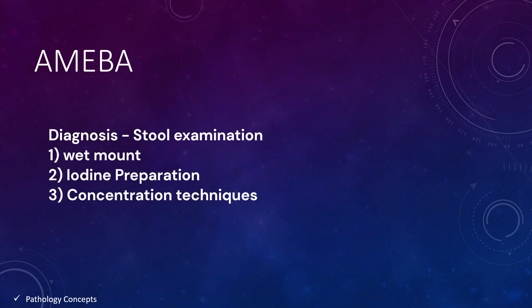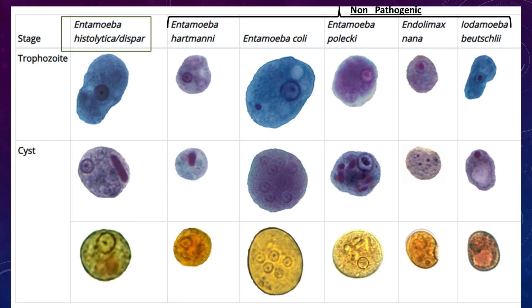The diagnosis of amoeba is mainly based on stool examination: wet mount preparation, iodine preparation, or concentration technique. Three consecutive stool samples improve the chance of detection. Trophozoites of E. histolytica are elongated in shape, 15 to 20 microns in size, and have a centrally placed karyosome in the nucleus. All other amoeba have an eccentrically placed karyosome in trophozoites — this is the distinguishing feature between E. histolytica and others.